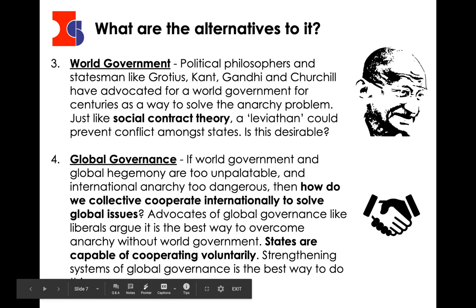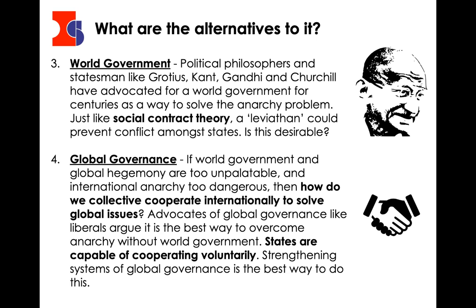The third alternative is world government. If you imagine the UN being an actual world government with democratic voting and decision making, that would be a world government. Philosophers throughout history — people like Gandhi, and statesmen like Churchill — advocated for world government as a way to solve the problem of anarchy. It operates just like the state operates to solve anarchy at the national level. Remember, we looked at social contract theory by Thomas Hobbes and Immanuel Kant. Hobbes described government as a leviathan — a big monster that can prevent conflict amongst smaller people below it. But some argue a world government could end in world dictatorship or world authoritarianism, which scares many people.